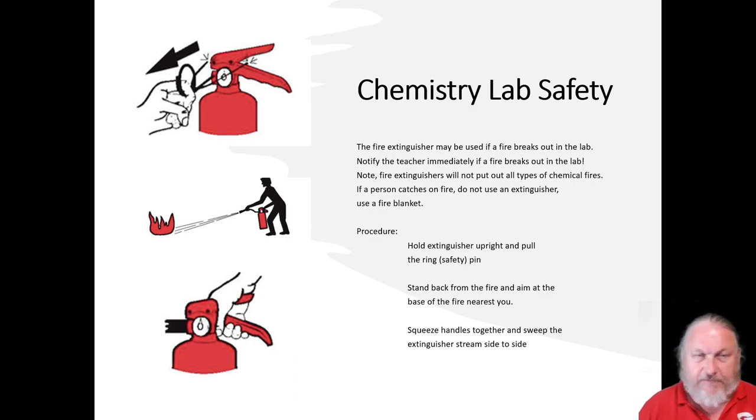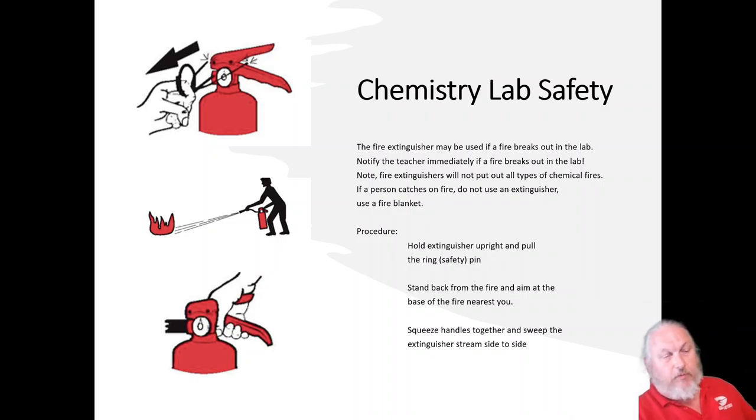Now what if we say fire, fire, fire? We have a fire extinguisher. The fire extinguisher can be used if the fire breaks out in the lab. The first thing you're going to do is notify me if the fire breaks out. Now the fire extinguisher will not put out all types of chemical fires. If a person catches on fire, don't use the fire extinguisher, use the fire blanket which I will show you where that's at. To use the fire extinguisher, hold the thing upright, pull the pin, the safety pin, and then step back away. And then you want to aim at the base of the fire, squeeze the handle together, and then sweep the stream from side to side.